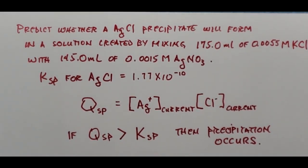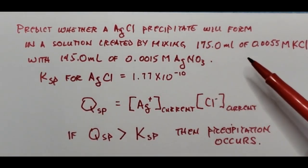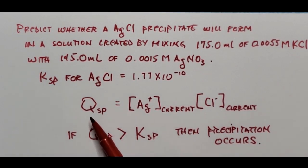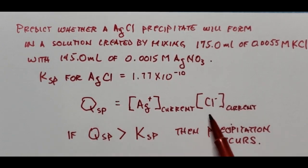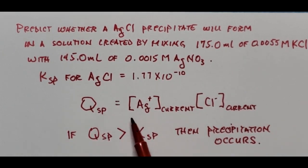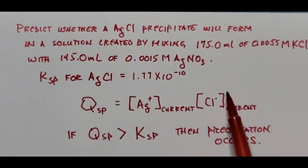This introduces the Qc concept from our equilibrium chapter. The Qsp uses the same expression as Ksp — silver concentration times chloride concentration — but plugs in the current molarities. If the Qsp exceeds the Ksp of 1.77 × 10⁻¹⁰, precipitation occurs. The key challenge is calculating what the current molarity of silver and chloride are after mixing two different volumes.